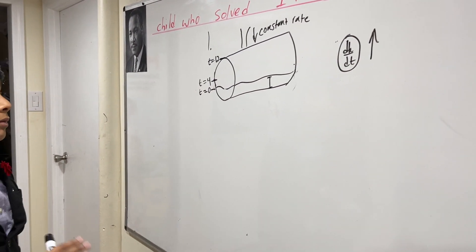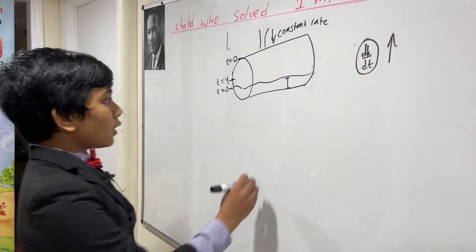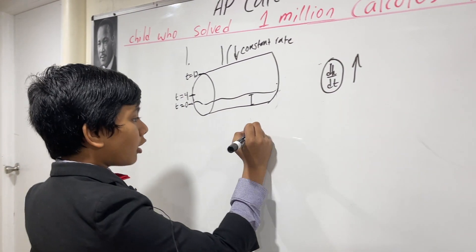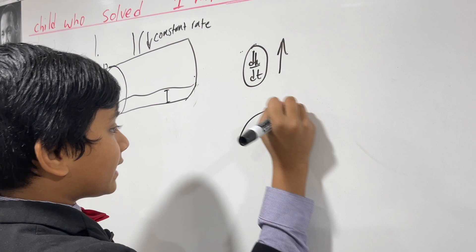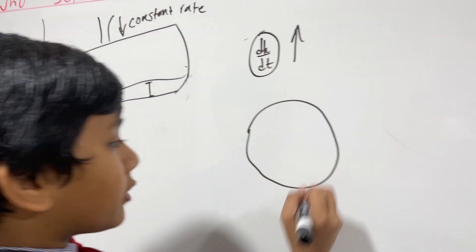Let's think about this. If we draw it, let's imagine it like a circle. Let's look at the front face.